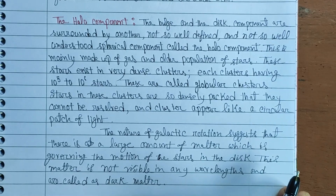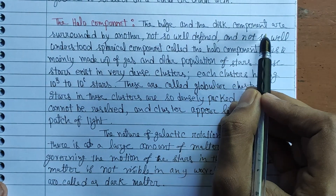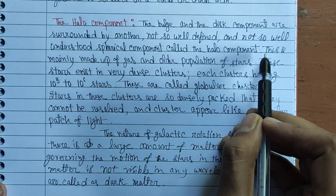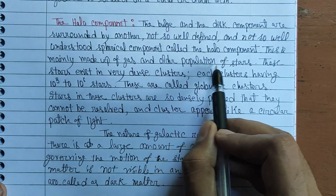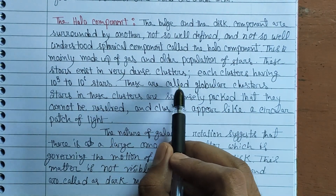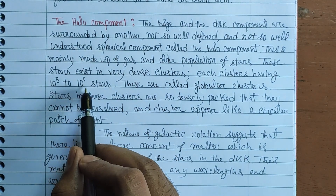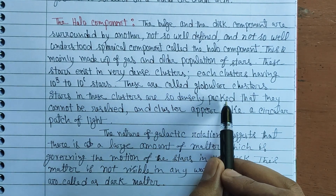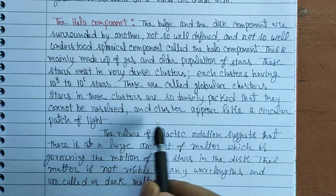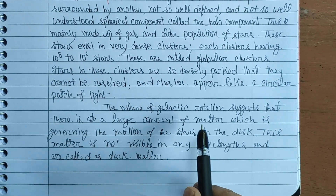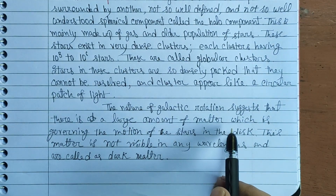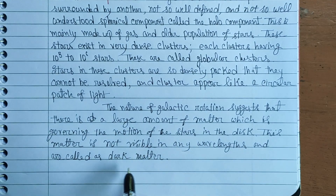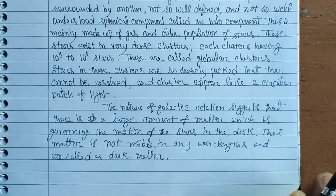Now let's discuss the last component, the halo component. The bulge and the disk component are surrounded by another not-so-well-defined and not-so-well-understood spherical component known as the halo component. This is mainly made up of gas and older population of stars. These stars exist in very dense clusters, each cluster having 10^5 to 10^6 stars, and these are called globular clusters. Stars in these clusters are so densely packed that they cannot be resolved individually, and clusters appear like a circular patch of light. The nature of galactic rotation suggests there is a large amount of matter governing the motion of stars in the disk that is not visible in any wavelength — this is known as dark matter.